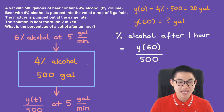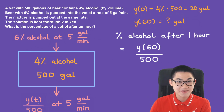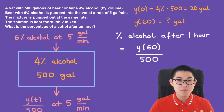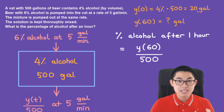In our diagram, we have 4% alcohol in 500 gallons of beer, with 6% alcohol entering at 5 gallons per minute. How much alcohol is leaving? That is the amount of alcohol out of 500 gallons — so it has to be y(t)/500 at a rate of 5 gallons per minute. The initial amount of alcohol, y(0), is 4% times 500, which gives us 20 gallons of alcohol.